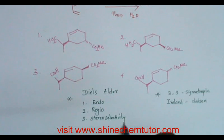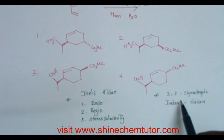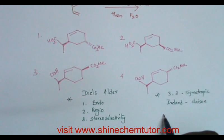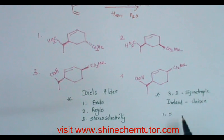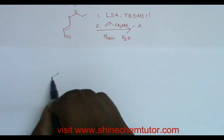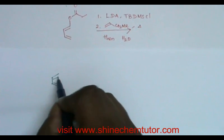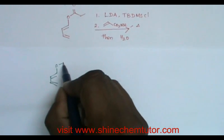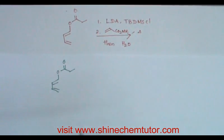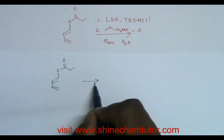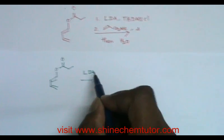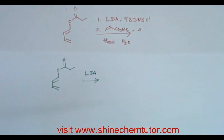This is very interesting because there is also 3,3-sigmatropic rearrangement, which is generally observed in 1,5-dienes. The given starting material is basically a diene ester. To this, I add LDA — lithium diisopropyl amide — which is a strong, bulky base.